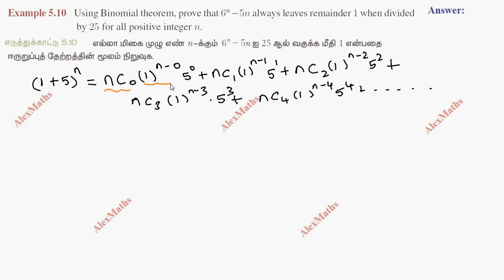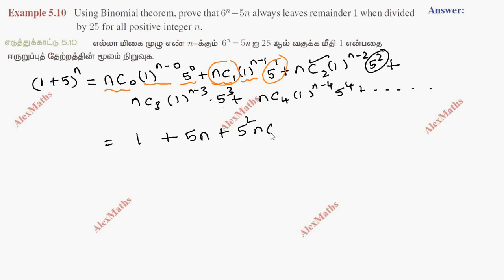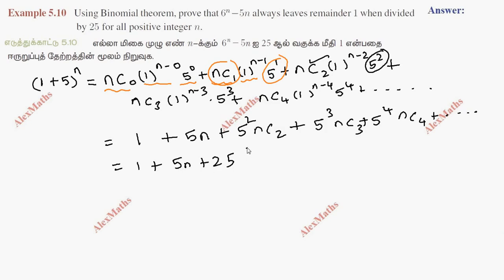nc0 is 1 and 1 power anything is 1, so the first term value is 1. The next term is nc1 times 5, which gives 5n. The remaining terms from nc2 onward involve 5 squared and higher powers, which are all multiples of 25.